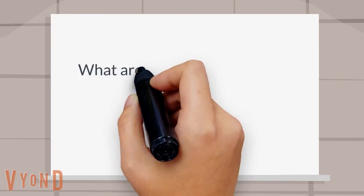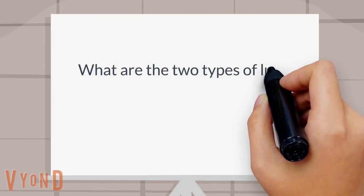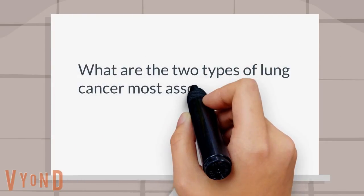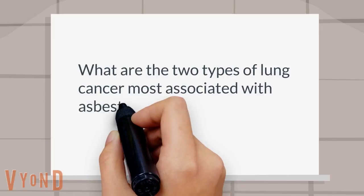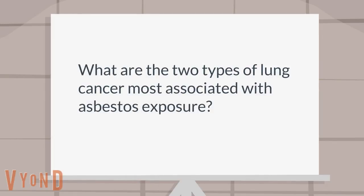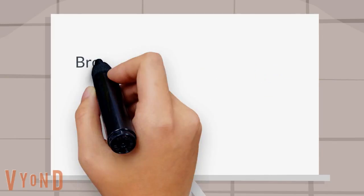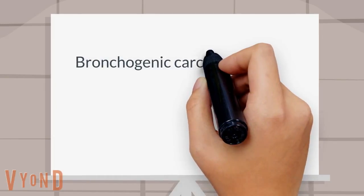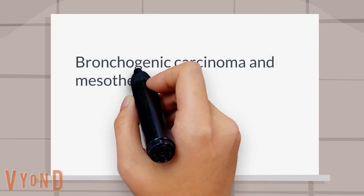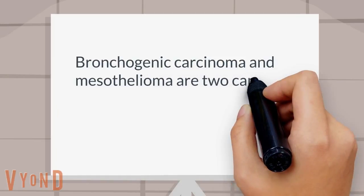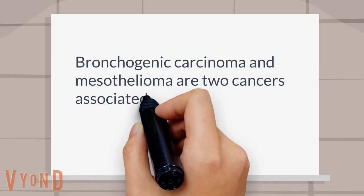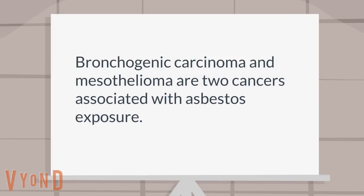What are the two types of lung cancer most associated with asbestos exposure? Bronchogenic carcinoma and mesothelioma are two cancers associated with asbestos exposure.